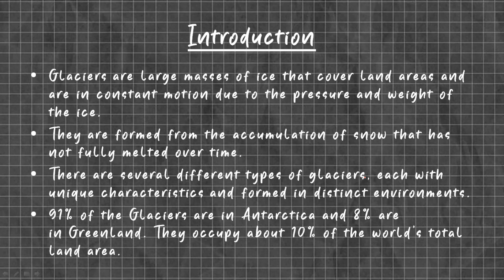So what are glaciers? Glaciers are large masses of ice that cover land areas and are in constant motion due to the pressure and weight of ice. They are formed from the accumulation of snow that has not fully melted over time. There are several different types of glaciers, each with unique characteristics and formed in distinct environments. 91% of glaciers are in Antarctica and 80% are in Greenland, and they occupy about 10% of the world's total land area.